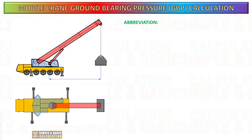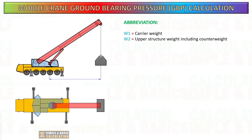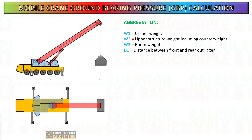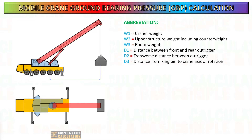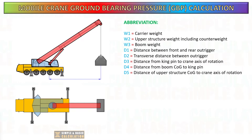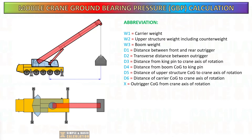This is the list of abbreviations we will use for our calculation: W1 is carrier weight, W2 is the upper structure weight including the counterweight, and W3 is the boom weight. L is the weight of the load, and R is the lifting radius.